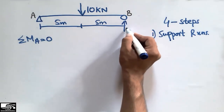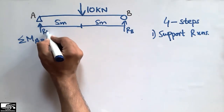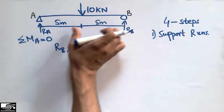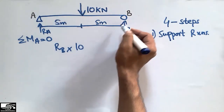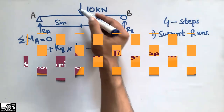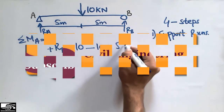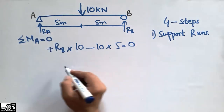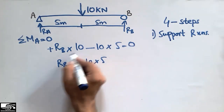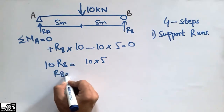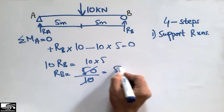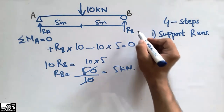To find the support reactions, we take the summation of moment at A equal to 0. The support reactions are RB and RA. RB into 10 — 10 is the moment arm, acting anti-clockwise so we take it as positive — minus 10 kilonewton load times 5 equals 0. So RB comes out to be 10 × 5 divided by 10, which is 5 kilonewton.